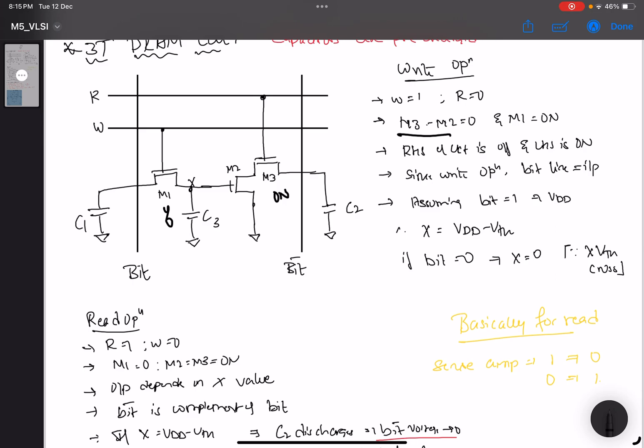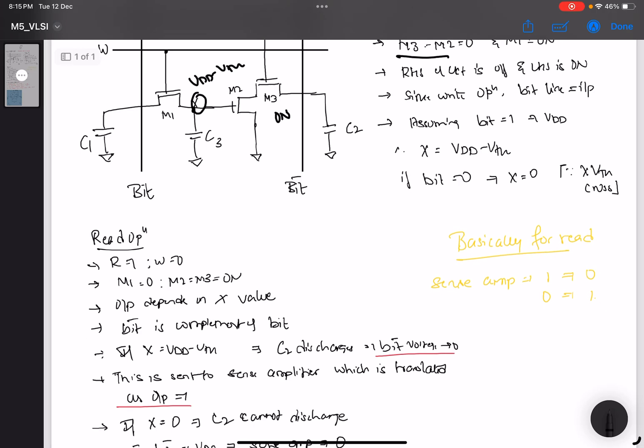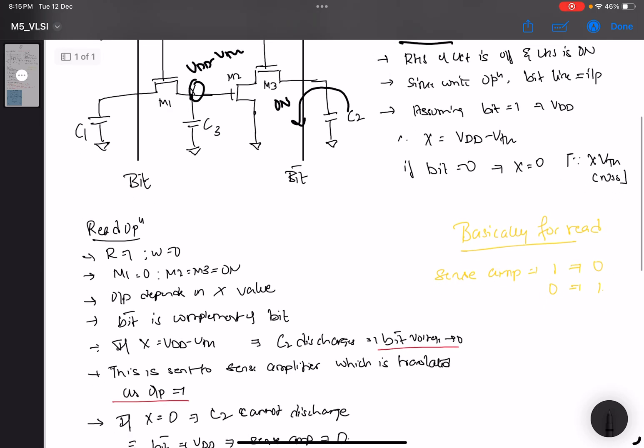Now the output for this side depends upon what the X value is. If X is VDD minus VTN, then we get C2. This C2 is going to discharge in this manner, and therefore the bit bar voltage, which is basically the complement of the bit value, that will decrease.